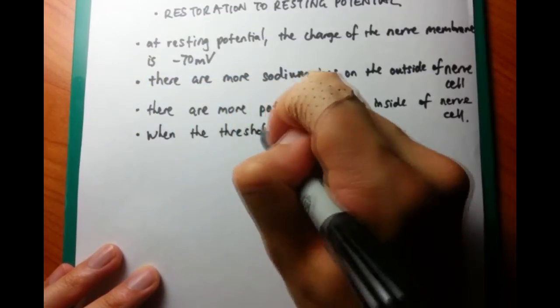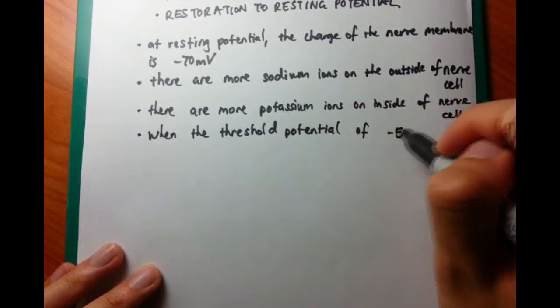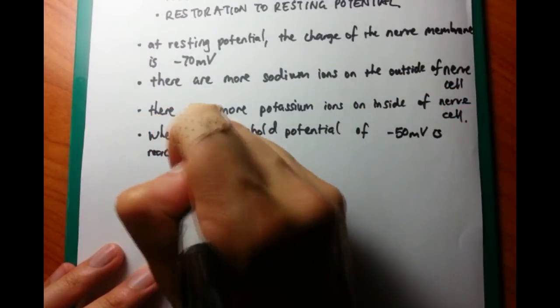When the threshold potential of negative 50 millivolts is reached, sodium ion channels—not sodium ions, but sodium ion channels—they open.